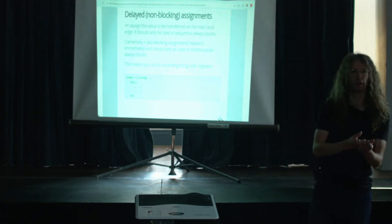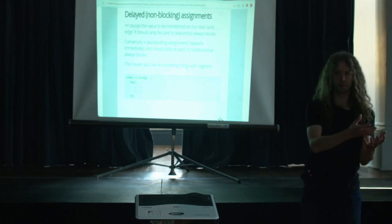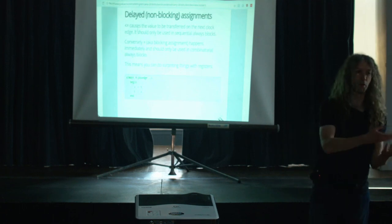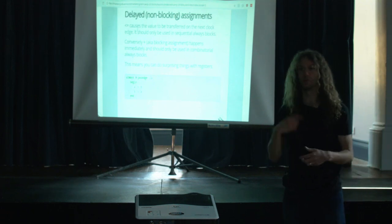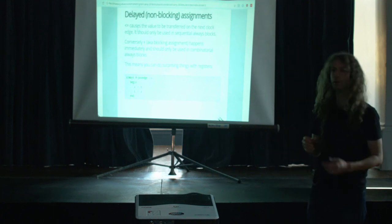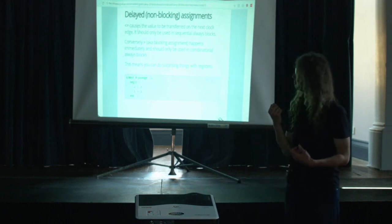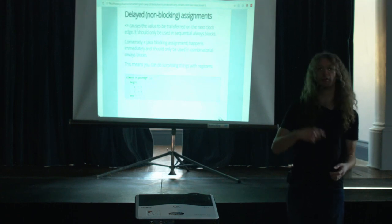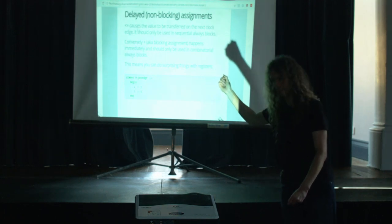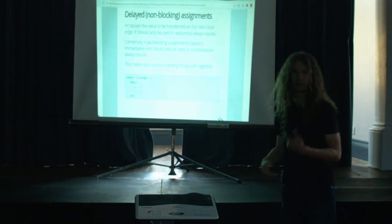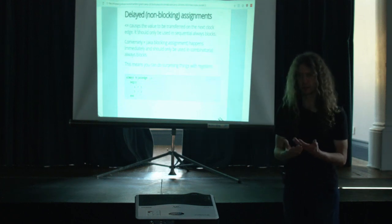These are called delayed or non-blocking assignments. When we write less-than-or-equals (<=), it causes the value on the right-hand side to be transferred to the variable on the left-hand side on the next clock edge. Whereas with a plain equals assignment, the value will be assigned immediately. This means you can do interesting things with registers — for example, the values of B and A can be swapped on every clock cycle, because both right-hand side values are taken from the current cycle and assigned on the next clock edge.